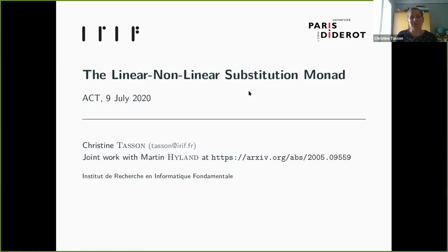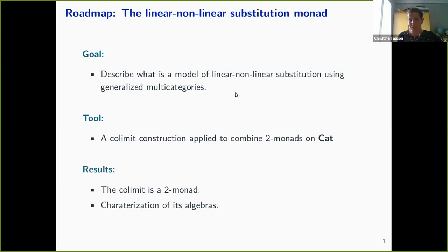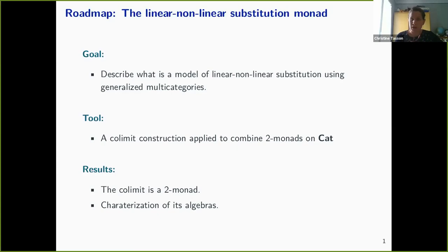Our goal was to describe what is a model of linear nonlinear substitution using generalized multi-categories. We had to introduce a tool which is a colimit construction applied to combine two monads on CAT, and the result we get is that the colimit is actually a two-monad, and we got a characterization of the algebras of the colimit.